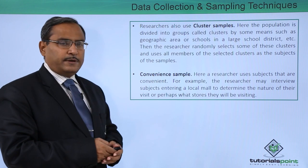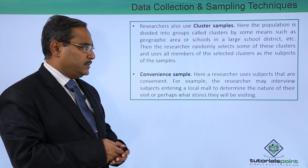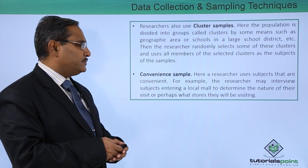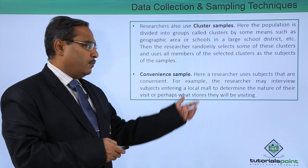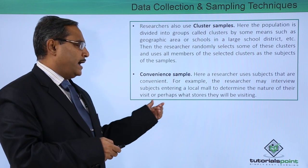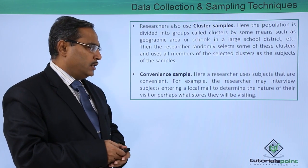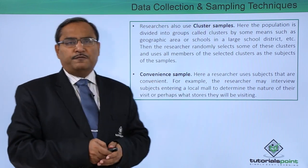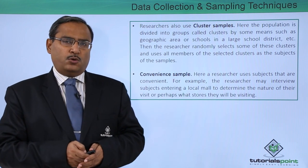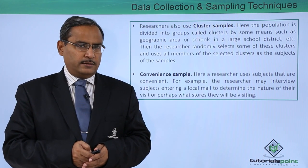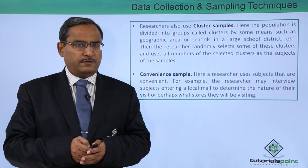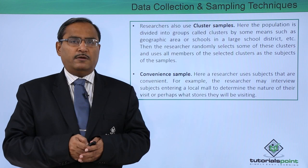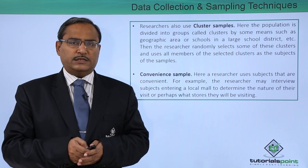The last one is convenient sampling. Here a researcher uses subjects that are convenient — for example, the researcher may interview subjects entering a local mall to determine the nature of their visit and perhaps what stores they will be visiting for shopping. In this way, there are different ways in which we can collect data: one method is through surveys, and we also have different ways to create a sample from the population. Thanks for watching this video.